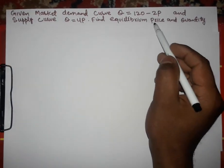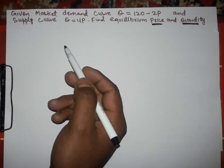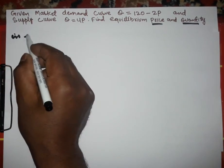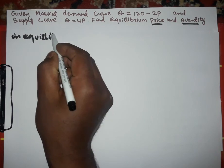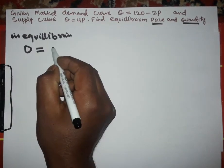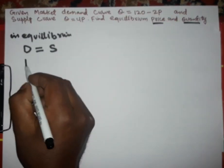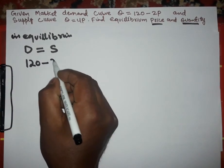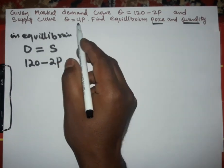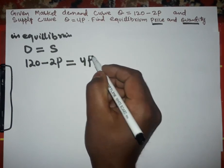To find the equilibrium price and quantity, we know that in equilibrium demand is equal to supply. So in equilibrium: demand = supply. Our demand curve is 120 - 2P, and that is equal to the supply curve, which is Q = 4P, so we write 4P. Now solving for P.